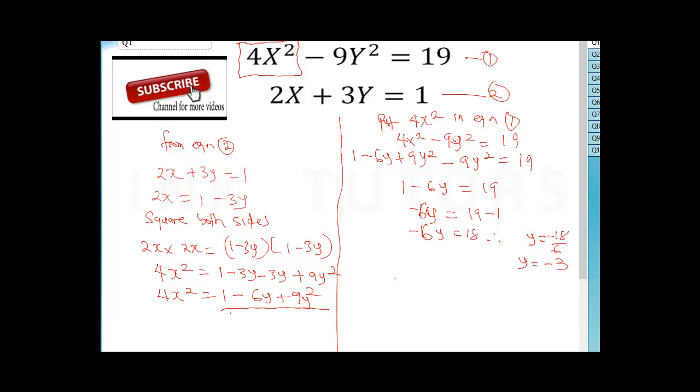Now to get our x from here, we can say 2x = 1 - 3y. Therefore, x = (1 - 3y)/2, which will give us (1 - 3(-3))/2. -3 times -3 will give us positive 9. So 1 + 9, this will give us 1 + 10 divided by 2.